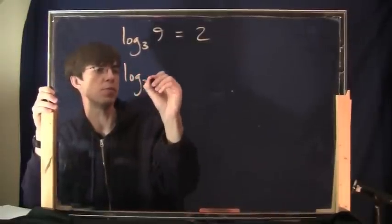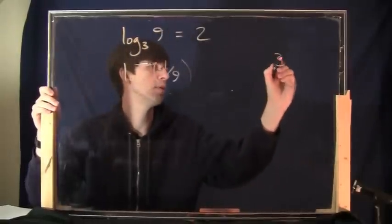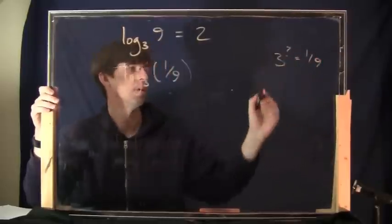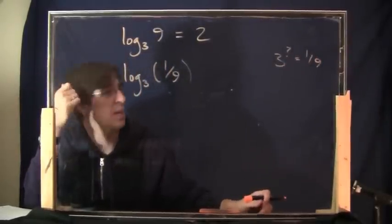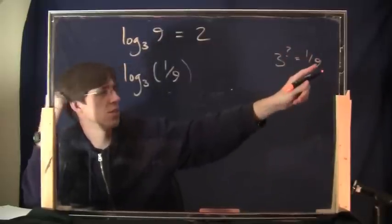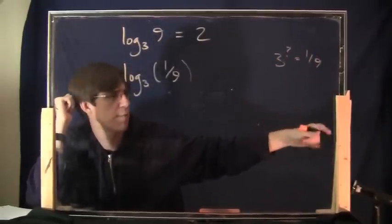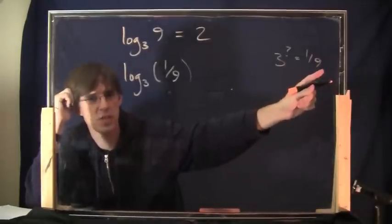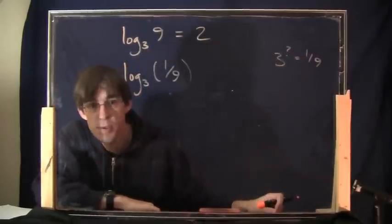How about this? Log base 3 of 1 ninth. This would mean 3 to some power equals 1 ninth. What do you think of that? Can you get 1 ninth by doing a power of 3? The fact that this is a fraction is a little weird. When you raise 3 to an exponent, it means you multiply 3 by itself over and over again. You're never going to get a fraction, are you? Well, actually, if you recall, there is such a thing as negative exponents.